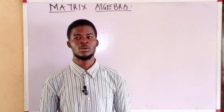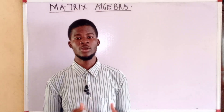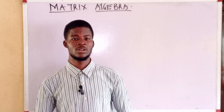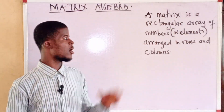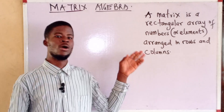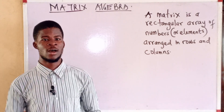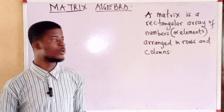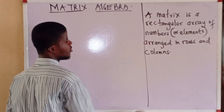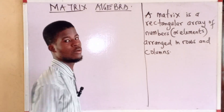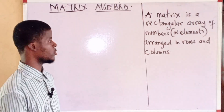In this video, we're going to talk about matrix algebra, the algebra of matrices. A matrix is a rectangular array of numbers or elements that are arranged in rows and columns. So when numbers are arranged in rows and columns to form an array, we call it a matrix.